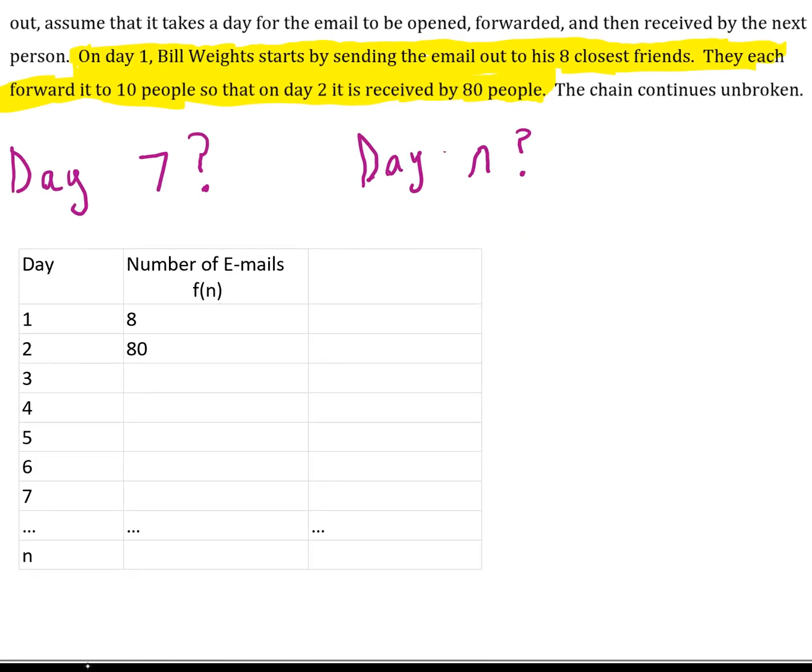It says on day one, Bill starts by sending the email out to eight of his closest friends. I mean, he's asking us to send it to 10 people, but he could only send it to eight. Come on, Bill. I'm just kidding. But they each forward it to 10 people so that on day two, it's received by 80 people. And then we assume that from there, the chain continues unbroken with everyone sending it to 10 more people.